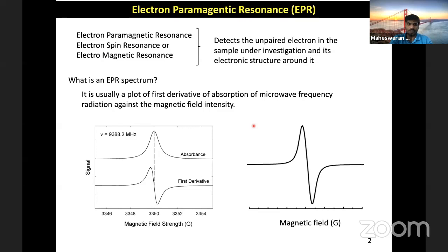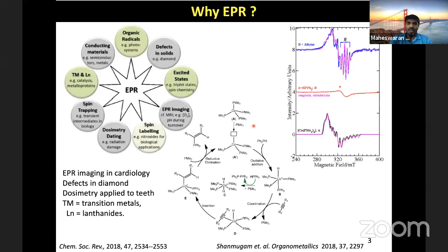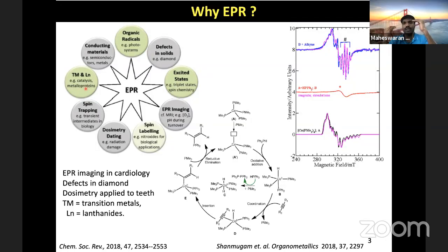How does an EPR spectrum look like, and why should you know about it? EPR can be used for studying a variety of complexes. As a chemist, we can study organic radicals — how radicals interact with each other — or unpaired electrons in transition metals or lanthanides, where we use these extensively for catalysis or metalloproteins. When talking about catalysis, the change in metal oxidation state is going to happen. EPR is an excellent technique to understand the mechanism of a particular system.